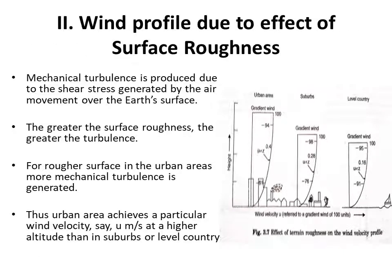Now let's see the wind profile due to the effect of surface roughness. Surface roughness means the presence of buildings or trees which obstruct the passage of wind. In urban areas there are a number of high-rise buildings which can obstruct the path of the wind.